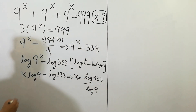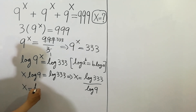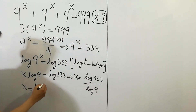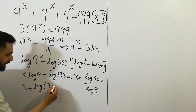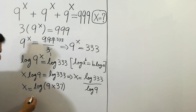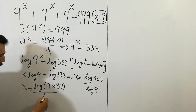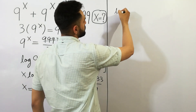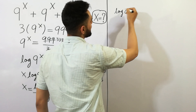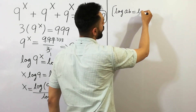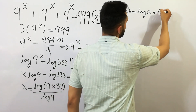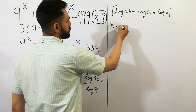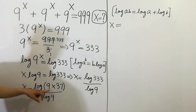Here log 333 can be written as log of 9 times 37, divided by log 9. As you know that log(a·b) is equal to log a plus log b, so we can write x is equal to log 9 plus log 37, all divided by log 9.